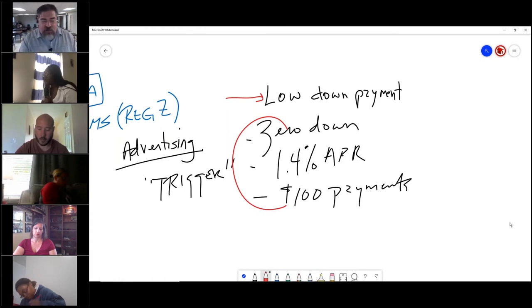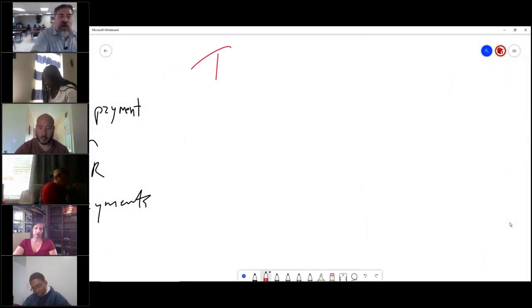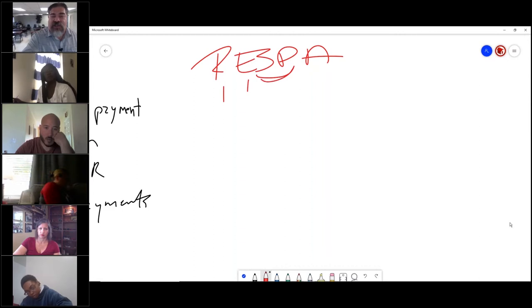There is a second one of these that is called RESPA. Somebody tell me what RESPA means: Real Estate Settlement Procedure Act. So guess what this deals with? All of the closing stuff.